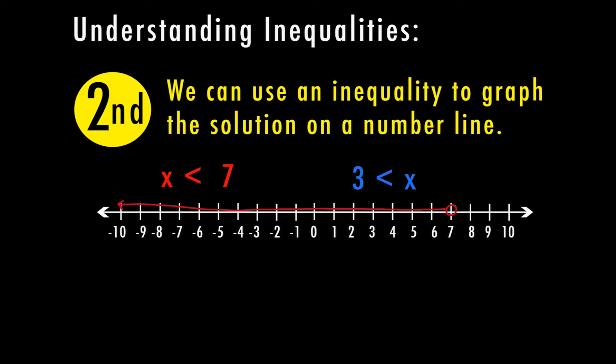For three is less than x, if I want to write it with my variable first, I have to flip the inequality — so x is greater than three. I find three on the number line, draw an open circle at three, then shade everything greater than three to the right. With the variable on the left side, the greater than symbol points in the same direction as the arrow on the number line.